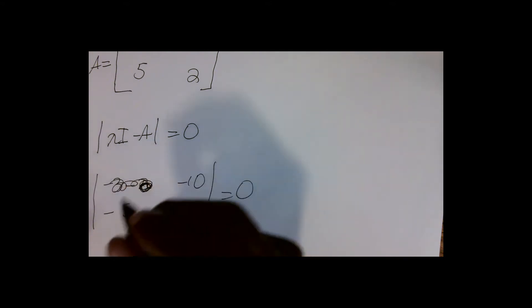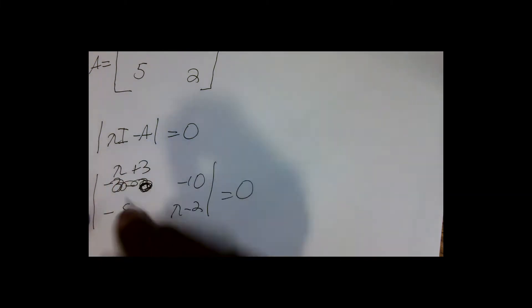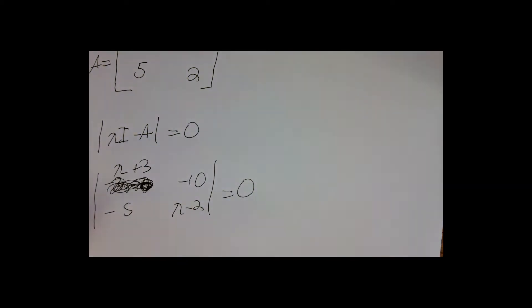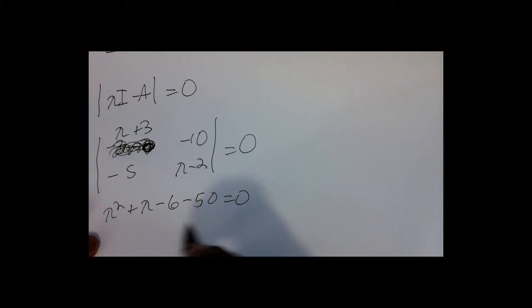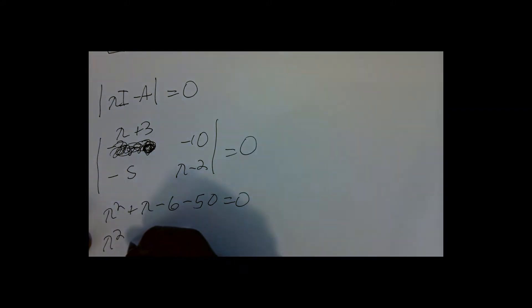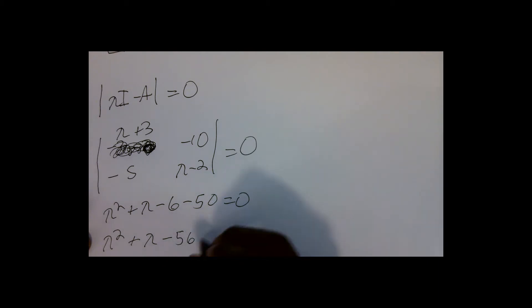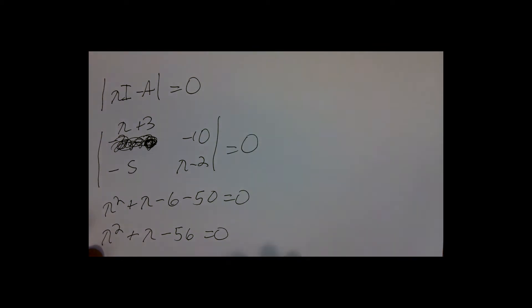When we find the determinant of that matrix — note that the top-left entry should be (λ+3); I had done A minus λI instead of λI minus A, so please forgive me. Correcting that and finding the determinant gives us λ²+λ−6−50=0. Combining those constant terms, we get the characteristic equation: λ²+λ−56=0.